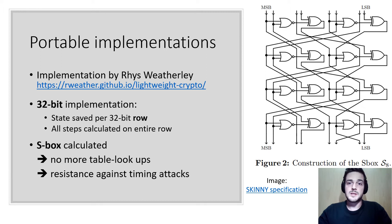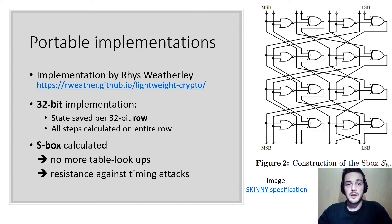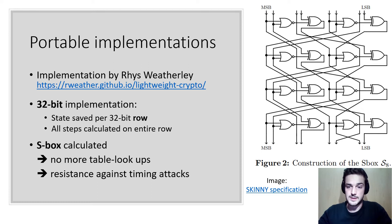An optimized portable implementation of 4Ki was already made by Rhys Weatherly, who made such implementations for almost all second round candidates of the NIST Lightweight Crypto competition. In his 32-bit implementation, each row of the internal state matrix is saved in one word and all steps of the round function are calculated on the entire row. To achieve constant time execution, the non-linear part — the S-box — is calculated according to its definition rather than using a lookup table.